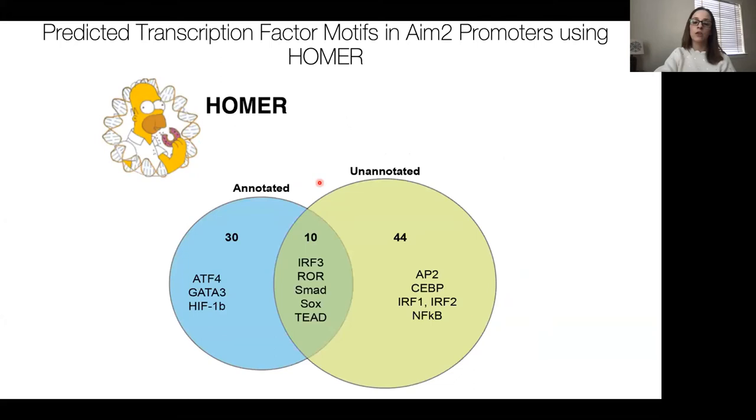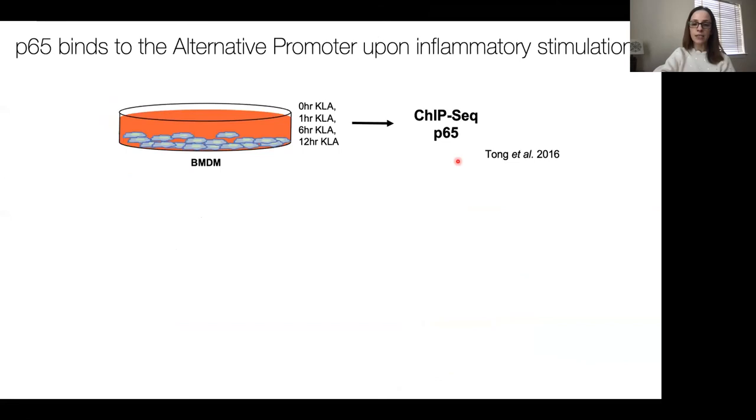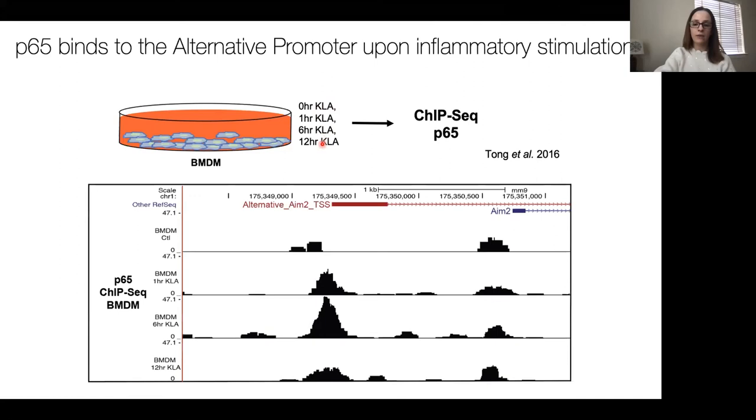We know there's use of an upstream promoter. We compared transcription factor motifs between the annotated promoter and this new upstream unannotated promoter. We were interested to see the majority of transcription factors driving this are inflammatory-associated transcription factors like the IRFs and NF-kappa-B, the P65 component of NF-kappa-B. We looked at data from the Smale lab, where they did ChIP-seq in macrophages for P65 in bone marrow-derived macrophages after inflammatory activation. They used KLA, which also activates TLR4. This is data from the UCSC genome browser—this is the canonical AIM-2, and this is our new upstream alternative unannotated transcription start site. We see there's a lot more P65 binding to this upstream region following inflammatory activation at the six-hour time point dominantly. We believe this is helping to drive this new isoform of AIM-2.